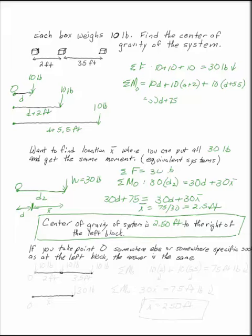If you take point O somewhere else or somewhere very specific like at this left block itself, then my system, my original system, has the three 10 pound blocks. The weight of the left one goes through point O and doesn't create a moment at O.